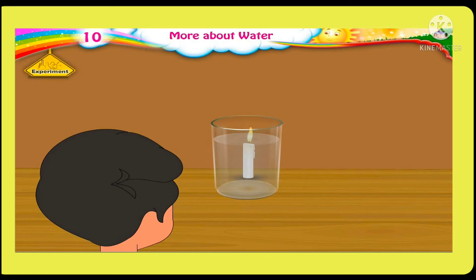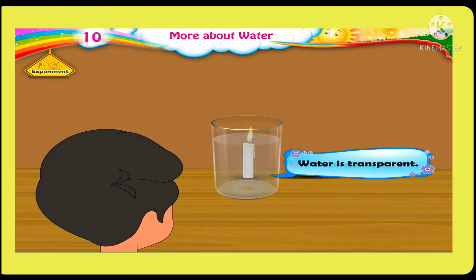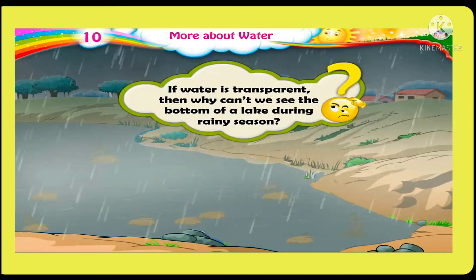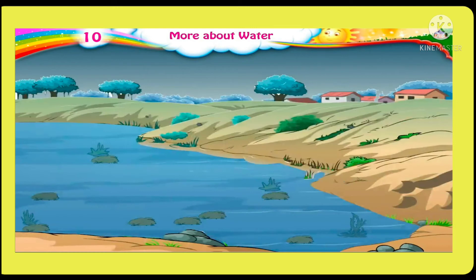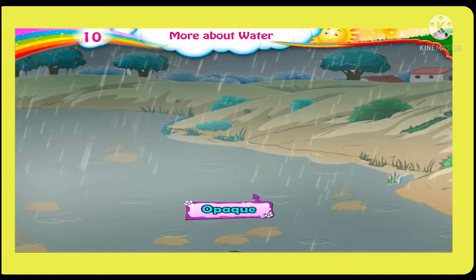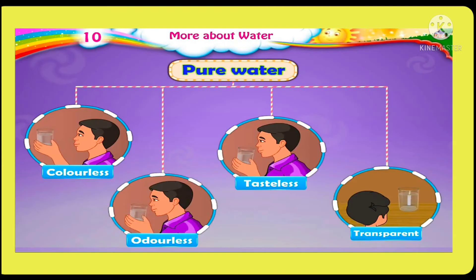Now let's see a candle through a glass filled with water. The candle is seen. Thus, we can conclude that water is transparent. Now a question that comes to mind: if water is transparent, then why can't we see the bottom of a lake during the rainy season? The reason is that we can see the bottom of a lake when the water is clean. However, during the rainy season, the water in a lake gets turbid — that is, opaque — due to which we cannot see the bottom.